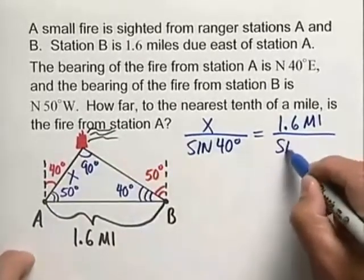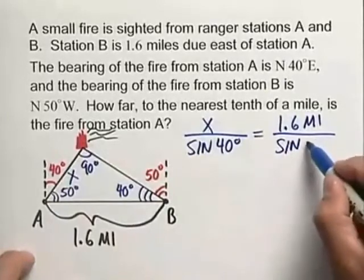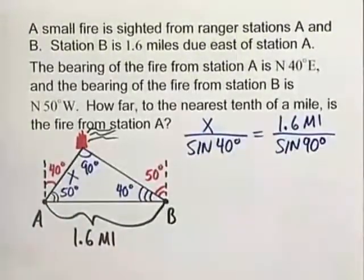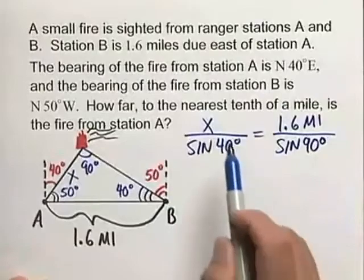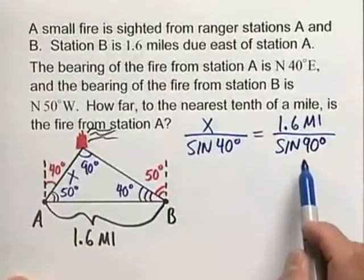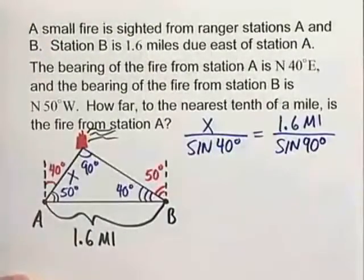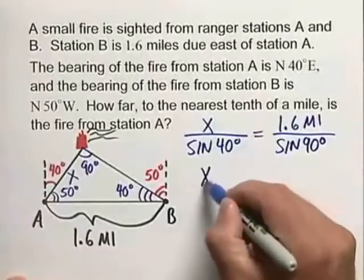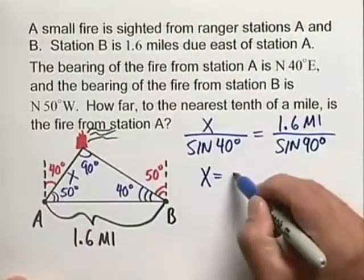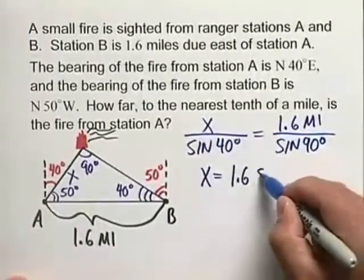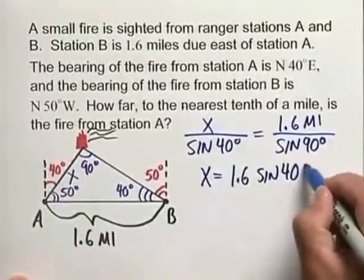So using the law of sines, this will be the sine of 90 degrees. So cross multiply x times the sine of 90, what do we know about the sine of 90, that that is 1. So we have x times 1, or simply x, is equal to 1.6 times the sine of 40 degrees.